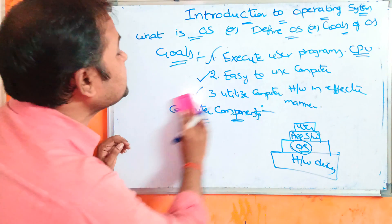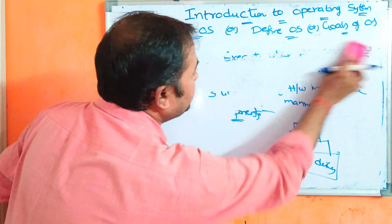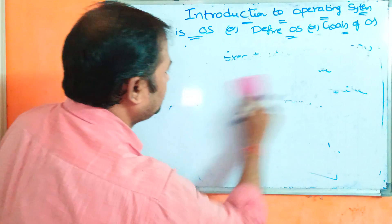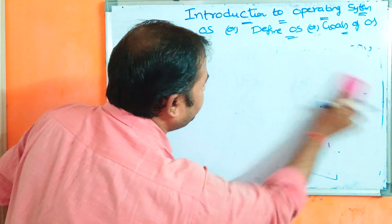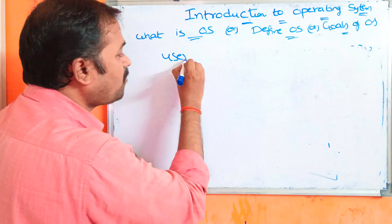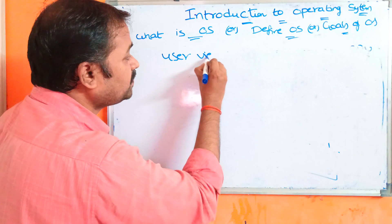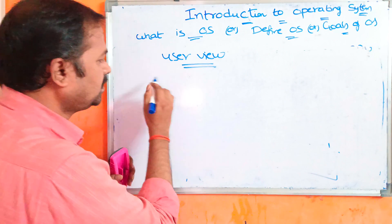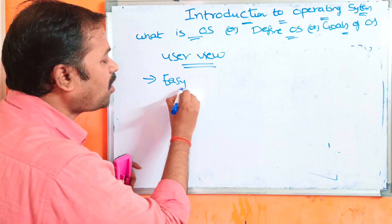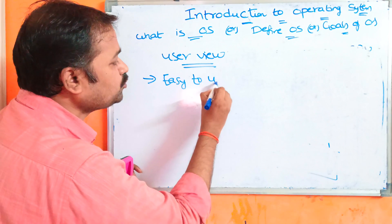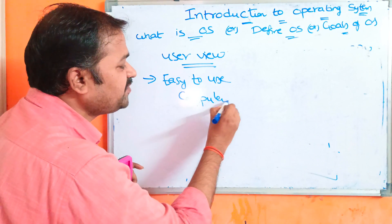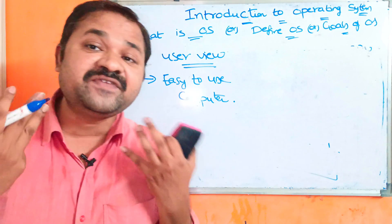Now let us see what an operating system is from the user point of view and from the system point of view. From the user point of view, the major advantage of the operating system is easy to use the computer — by using an operating system we can use the computer very easily.